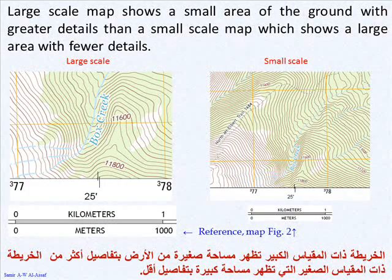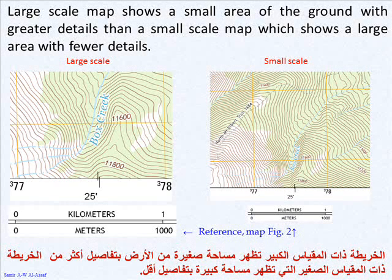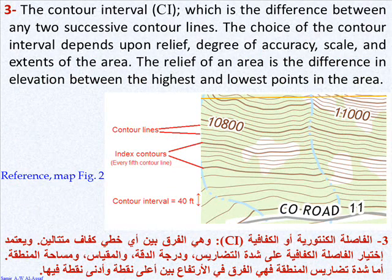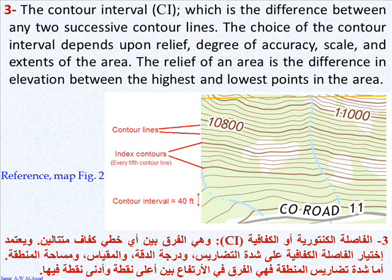A large-scale map shows a small area of the ground with greater details than a small-scale map, which shows a large area with fewer details. Three, the contour interval, which is the difference between any two successive contour lines. The choice of the contour interval depends upon relief, degree of accuracy, scale, and extents of the area.